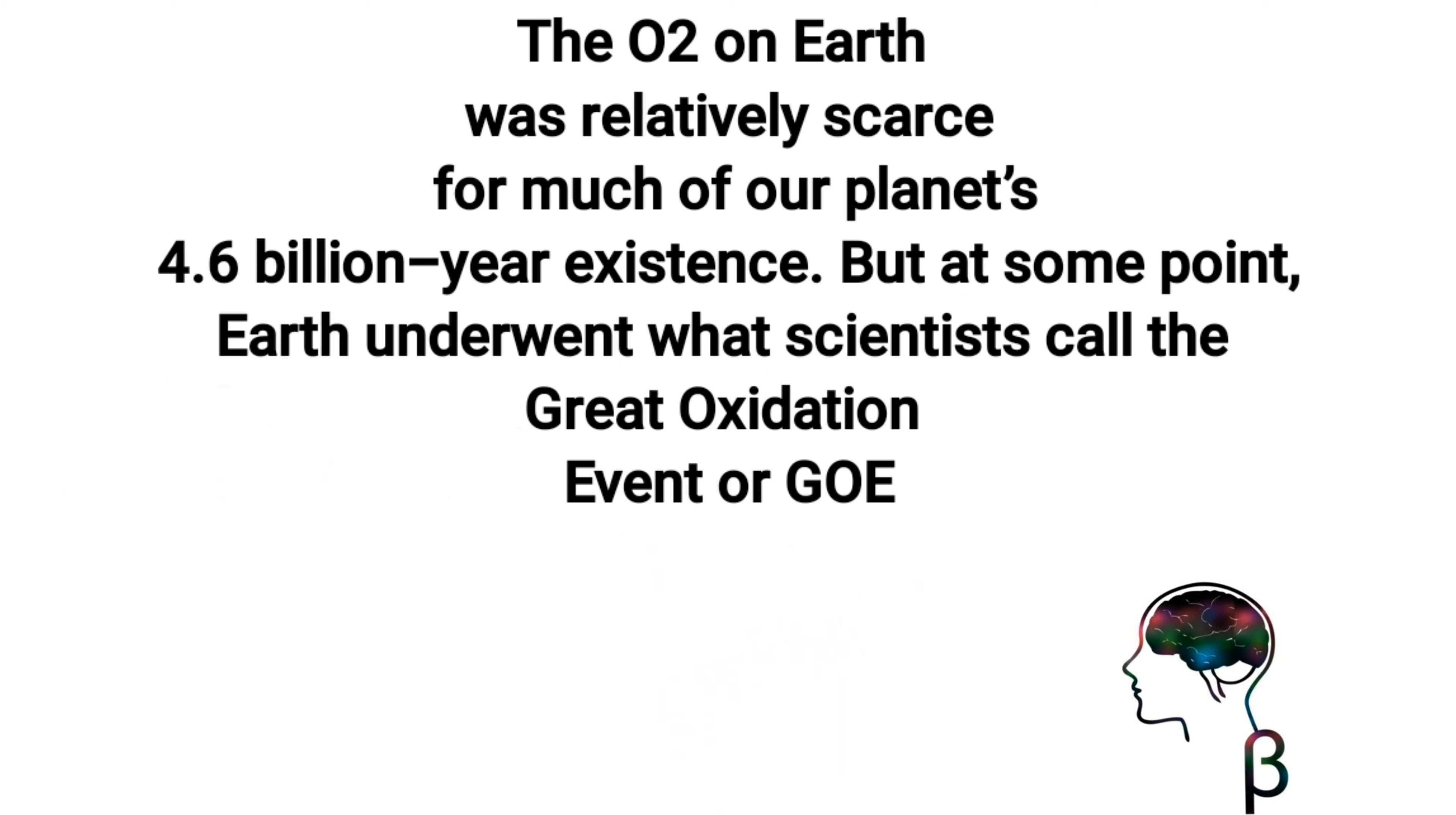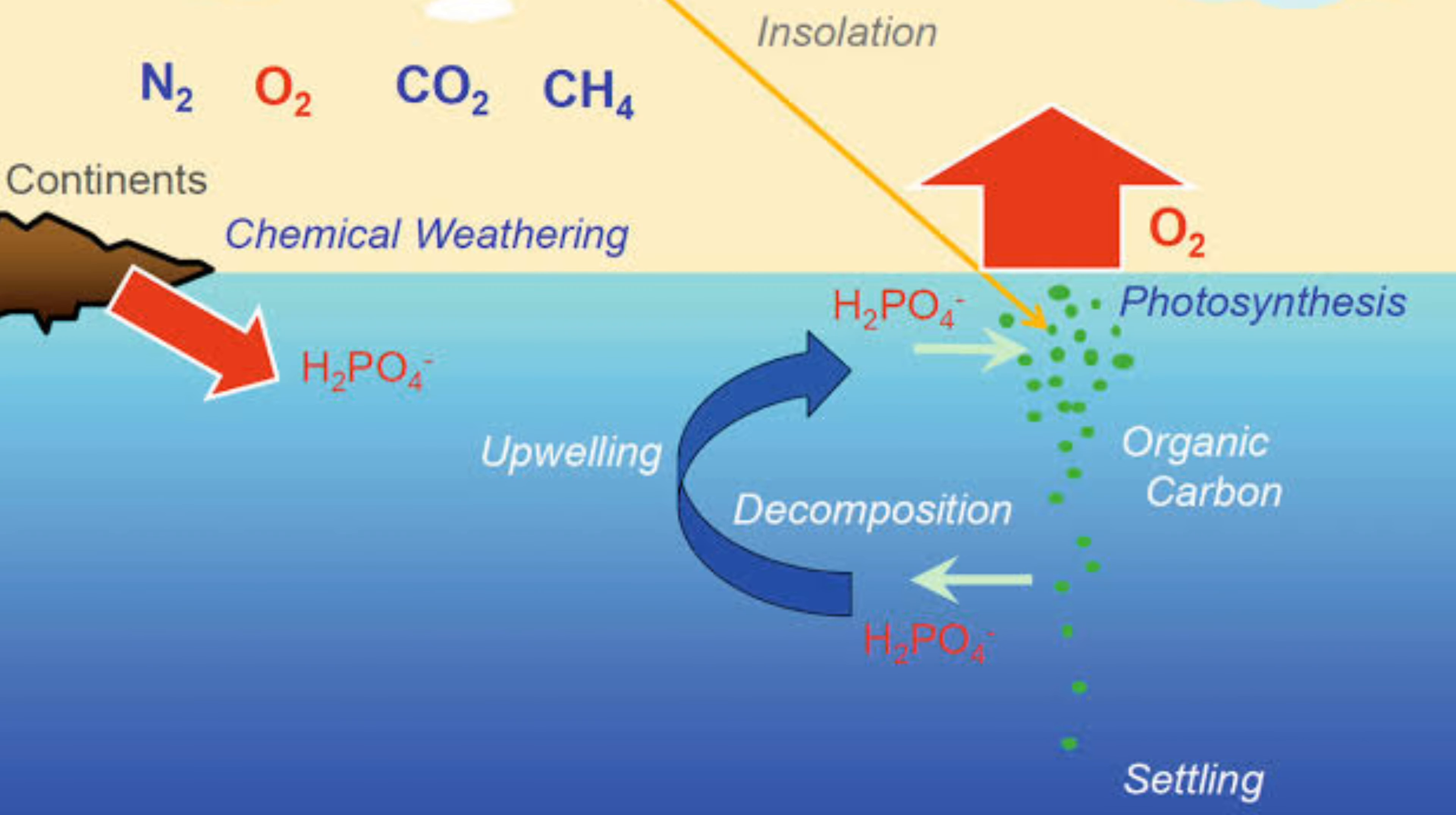O2 on Earth was relatively scarce for much of our planet's 4.6 billion year existence. But at some point, Earth underwent what scientists call the Great Oxidation Event, or GOE.